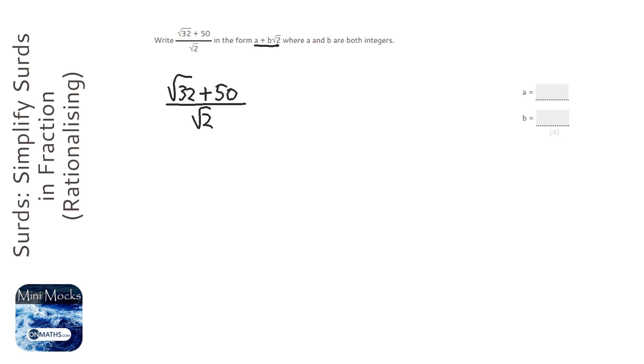So to rationalize the denominator, all you do is you times top and bottom by the surd at the bottom. So we're going to times the top by root 2. And to do that, because there's multiple terms on the top, I put them in brackets. And times root 2 by root 2, which is just going to be 2.